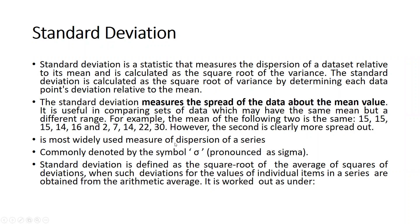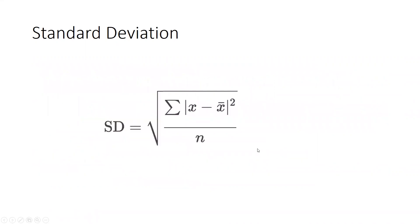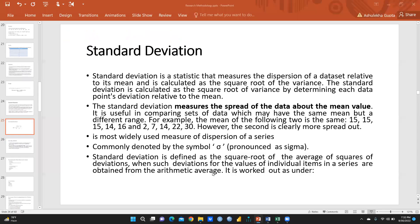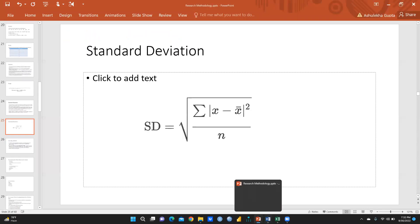Standard deviation is the most widely used measure of dispersion of a series, commonly denoted by the symbol sigma. It is defined as the square root of the average of squares of deviations, when such deviations for individual items in a series are obtained from the arithmetic average. The formula is: SD equals the summation of (x minus x-bar) squared, divided by n — where x-bar is the mean value and n is the total number in the population.